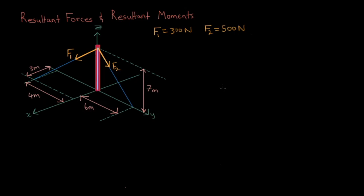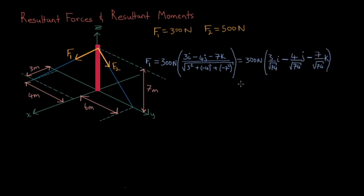F1 points down 7m, then 4m in the negative y direction, and then 3m in the positive x direction. So, we will write 3i-4j-7k. And just to clarify, the 7 is negative because it points downward on the z-axis. Divide that by the magnitude, and then multiply by 300N. Doing the math will give us the following vector: 105i-139j-244k.